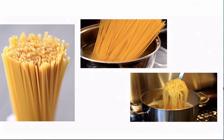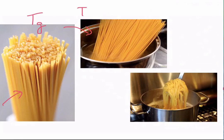The final example is dry spaghetti, which is in a glassy state — hard and brittle — and has its own Tg. When we put it in hot boiling water, the temperature is much higher than the Tg, so we have T above Tg again. The spaghetti becomes softer and transforms into a rubbery state — which is the form of spaghetti we normally eat.